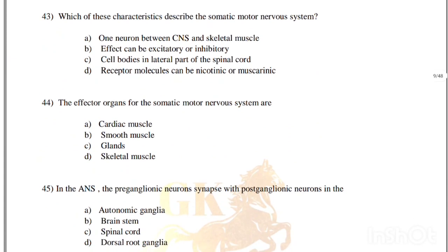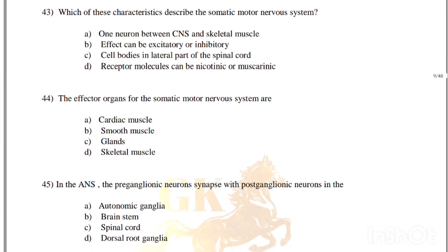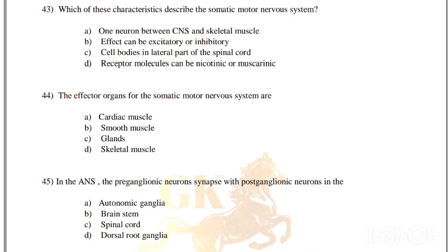Which of these characteristics describes the somatic motor nervous system? One neuron between CNS and skeletal muscle; effector can be excitatory or inhibitory; cell bodies in lateral part of spinal cord; receptor molecules can be nicotinic or muscarinic. Correct answer is option A, one neuron between CNS and skeletal muscle.